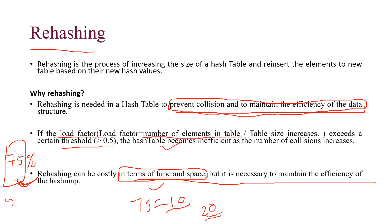Previously the table size was 10 and now it becomes 23, but the number of elements is still 8 or 9 only. So the space consumption is more here, which is why rehashing has high space complexity. But for maintaining the hash map property and maintaining the efficiency of the hash map, we use rehashing.